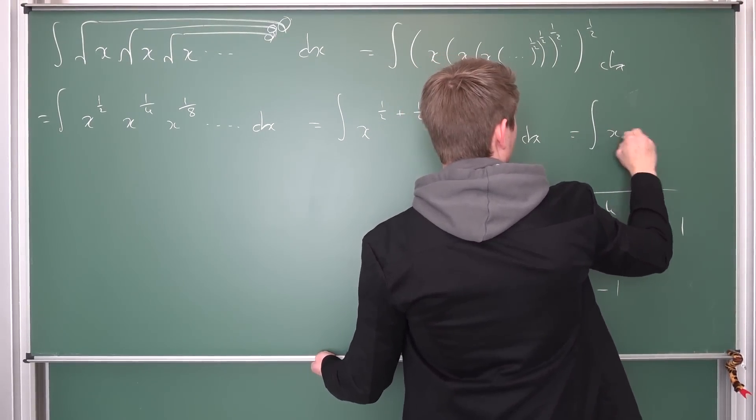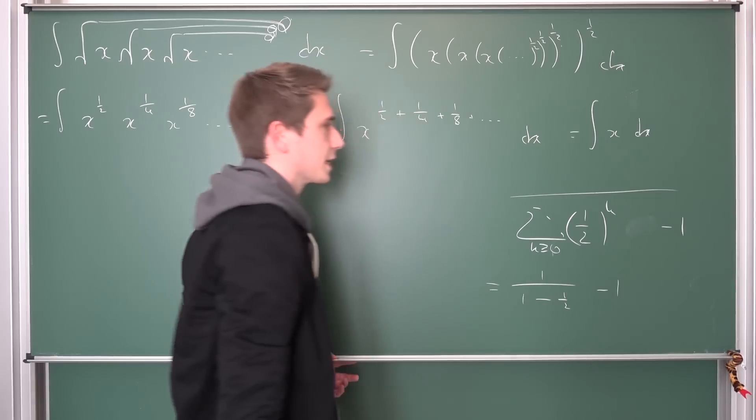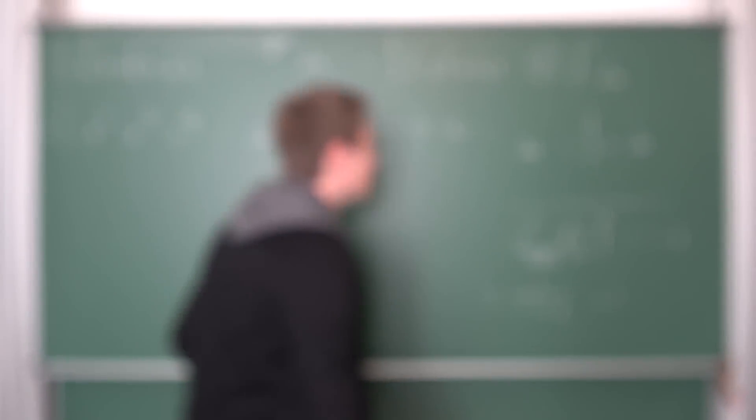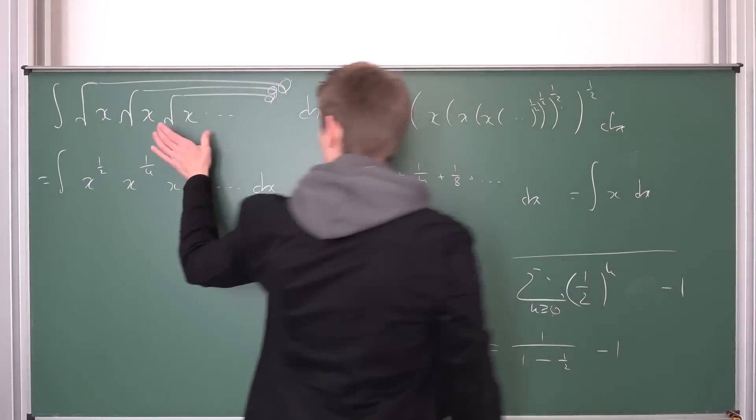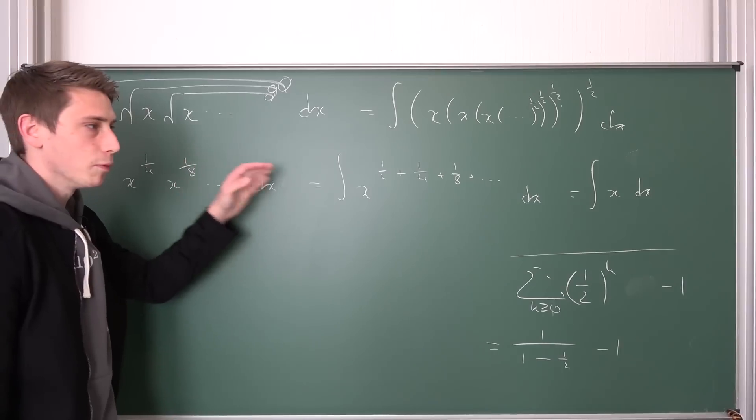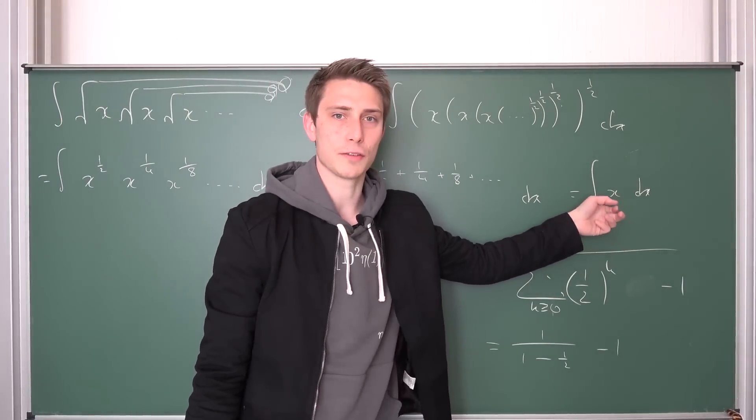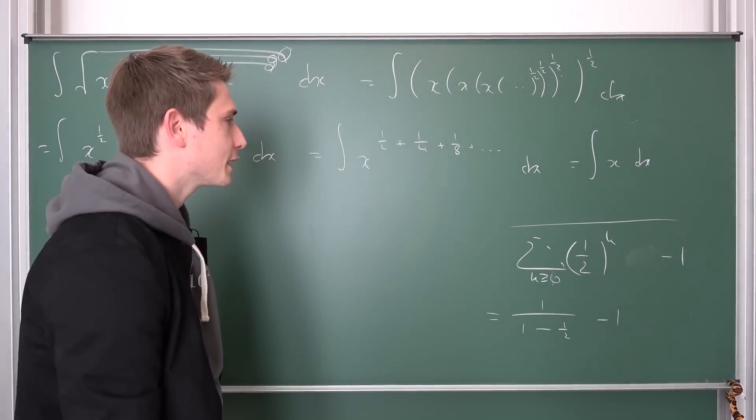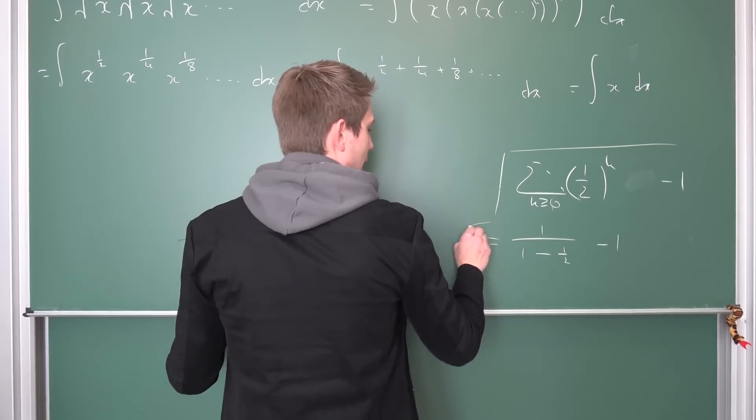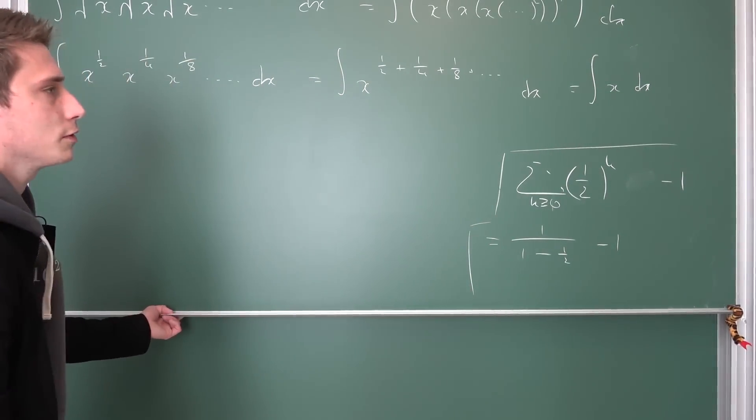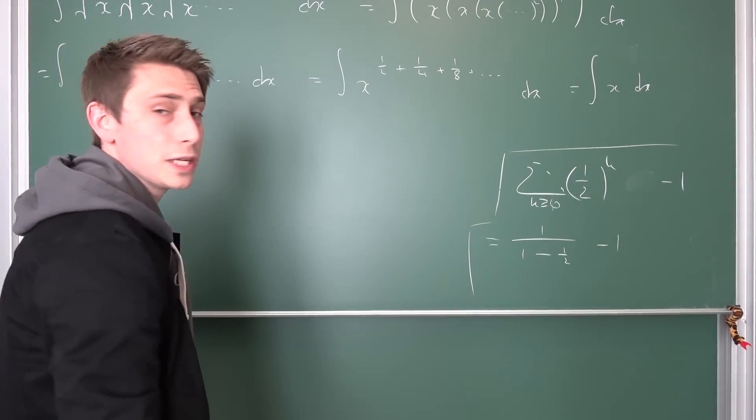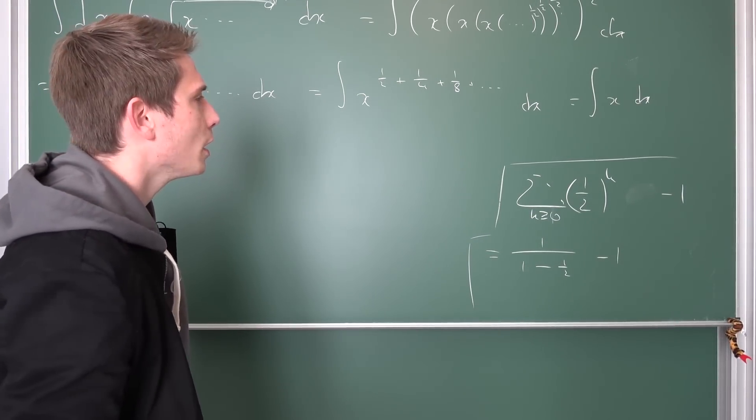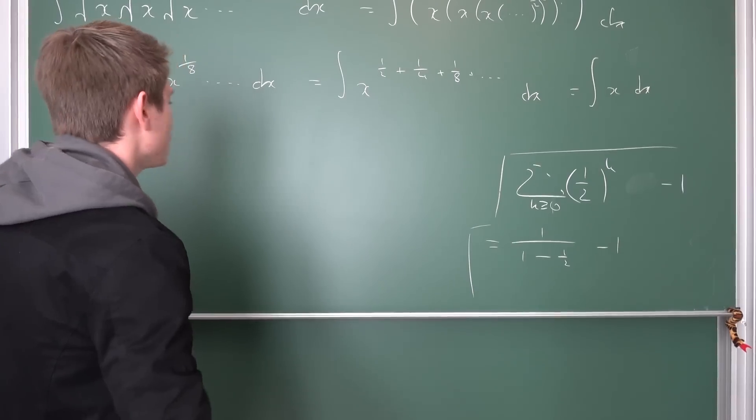So this thing is just a geometric series when it starts at zero. And this is going to give us one over one minus one-half, minus one. One minus one-half is one-half. Taking the reciprocal is two, minus one is just one. So we have the integral of x dx. We know what this is going to evaluate to. I believe this is the worst way to represent our boy, the integral of this first-degree polynomial. Could we do it even better? Could we make this even worse? Could we make it even harder to evaluate?